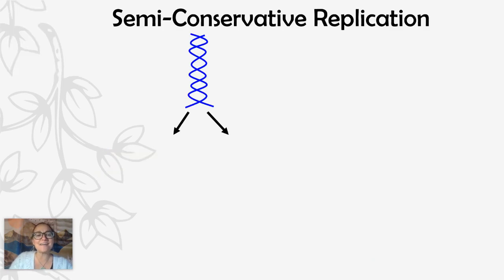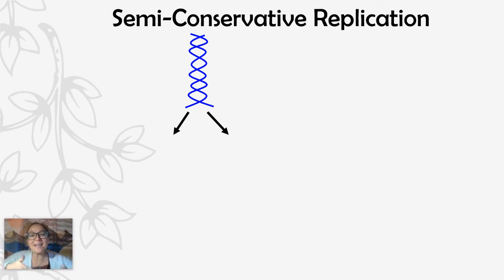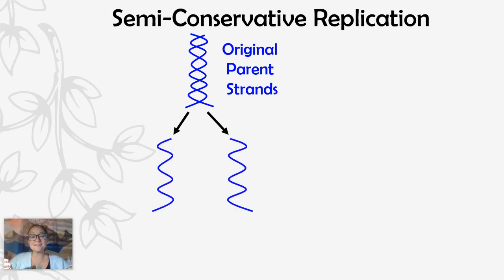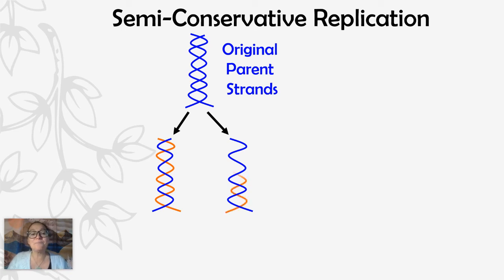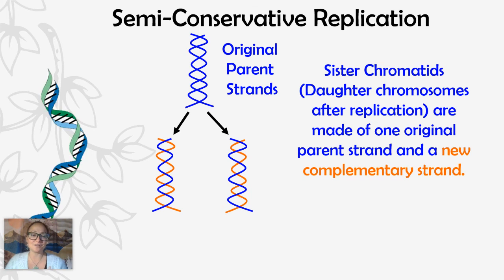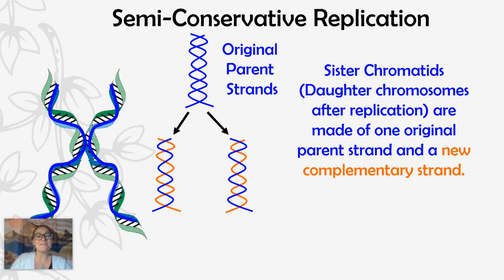The process of DNA replication is called semi-conservative replication. We have original parent strands, and when helicase unzips them, each new strand will have a piece of the original parent. We use one side as the guide or template and follow base pairing rules to build the complementary strand. The two sister chromatids made during S phase are each half original and half new DNA — that's what semi-conservative means. That is it for DNA replication — great job!